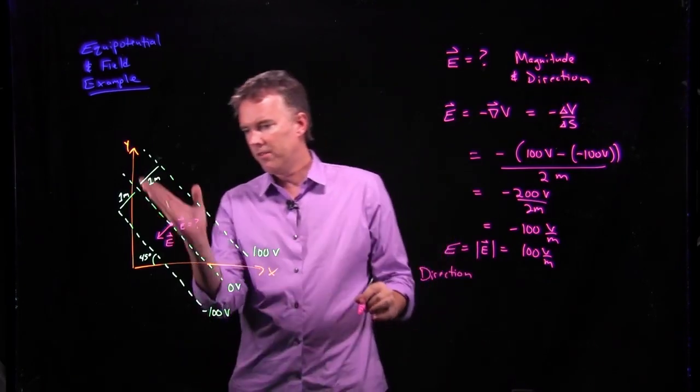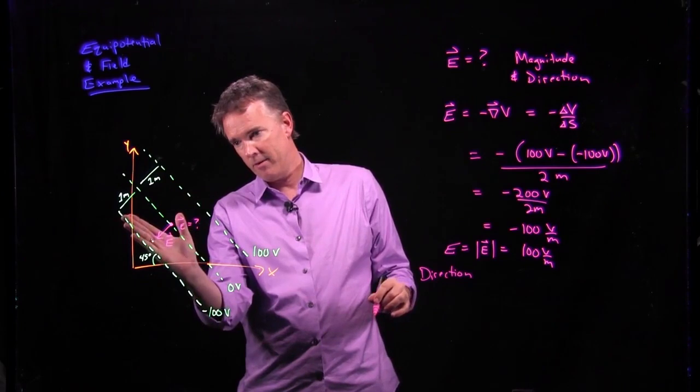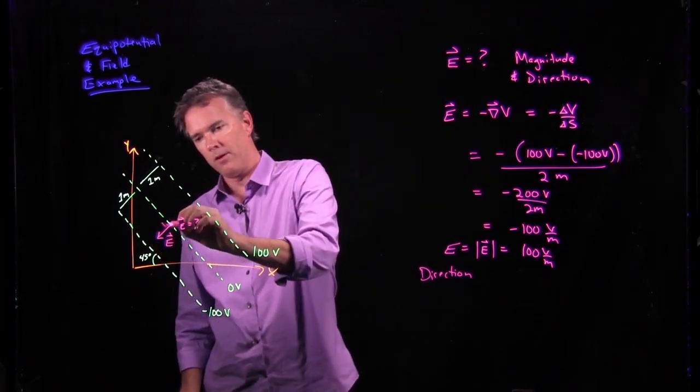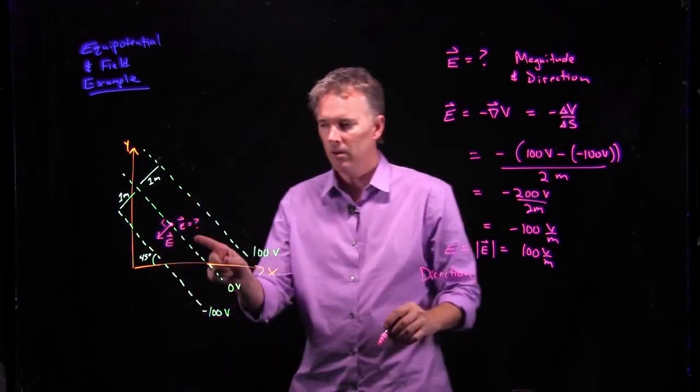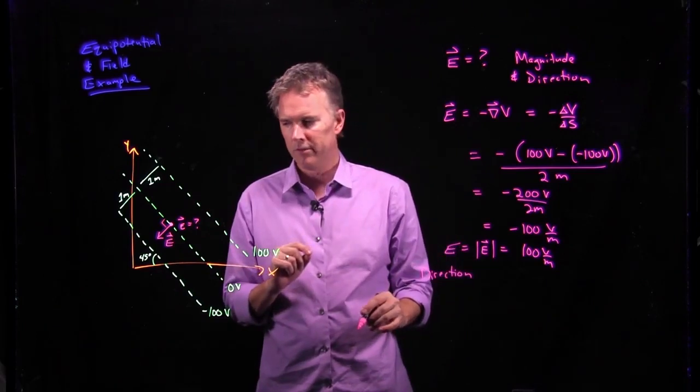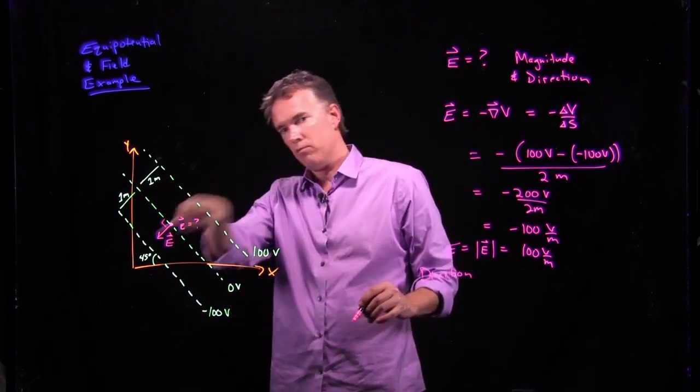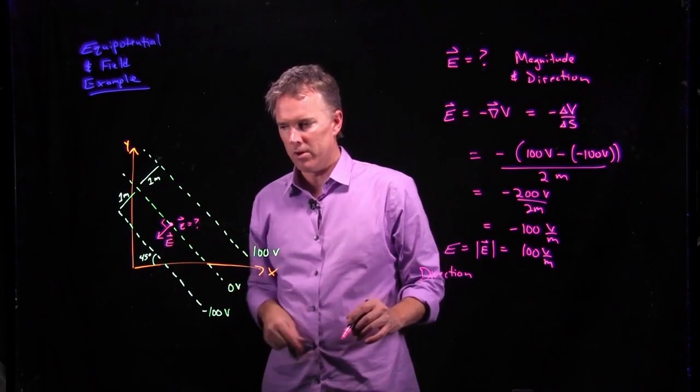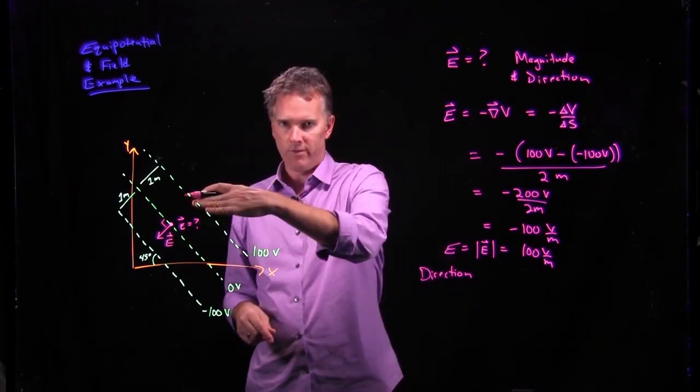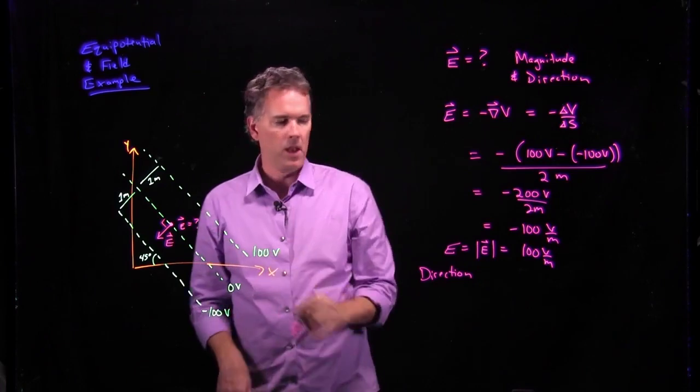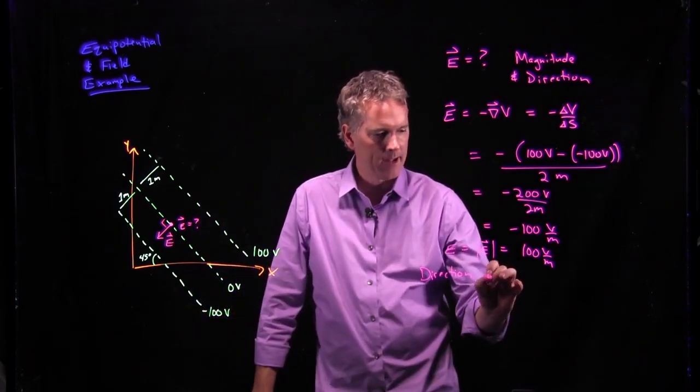Well, since these things are oriented at 45 degrees, and we know that the electric field has to be at a right angle to the equipotential surfaces, it has to be pointing right back down towards the origin, which would be 45 degrees below the negative x-axis.